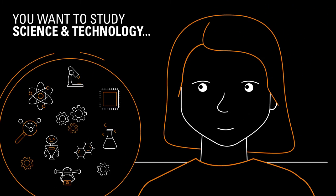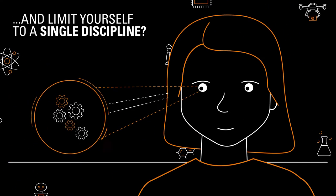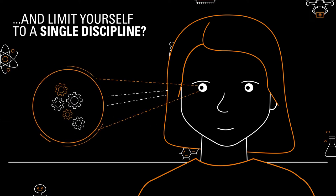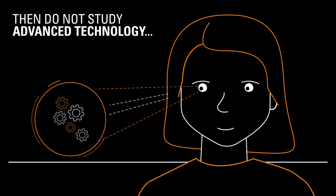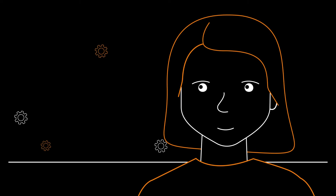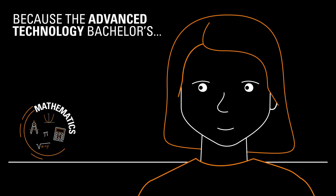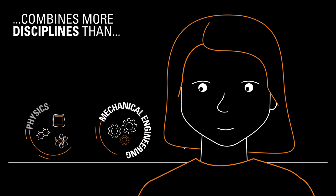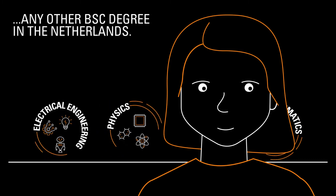You want to study science and technology and limit yourself to a single discipline? Then do not study advanced technology at the University of Twente. Because the advanced technology bachelor's combines more disciplines than any other bachelor degree in the Netherlands.